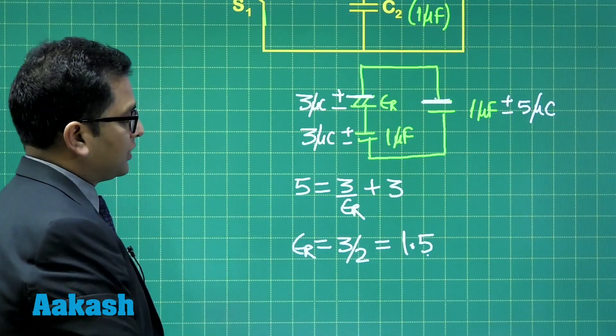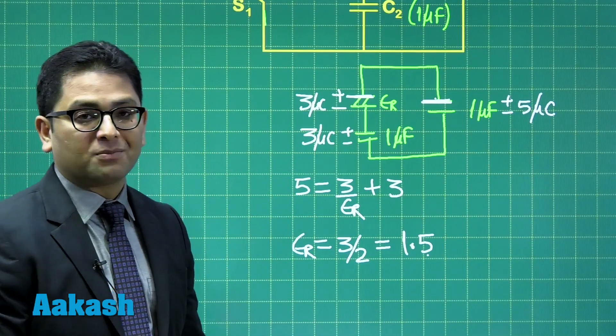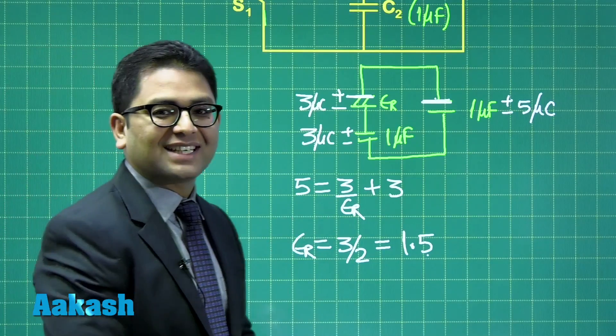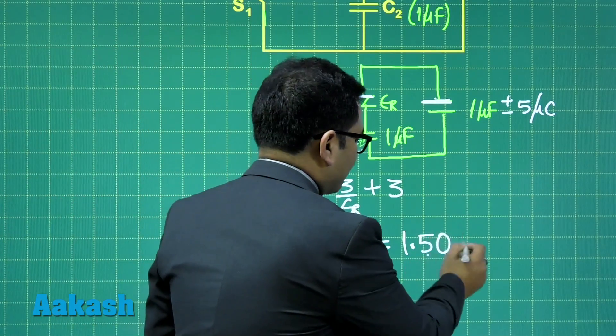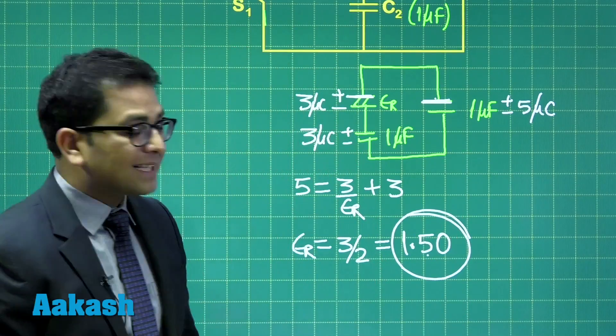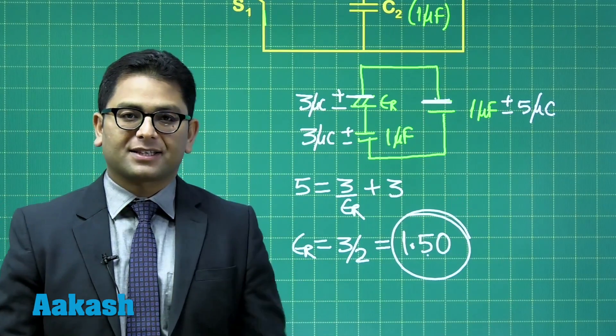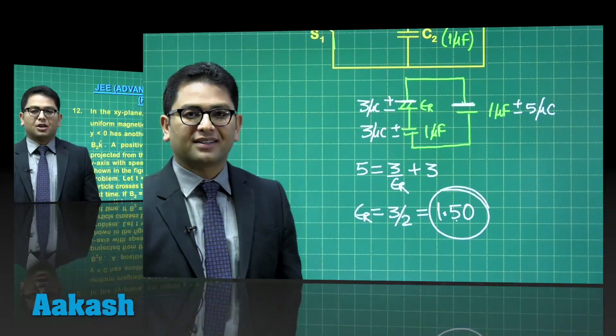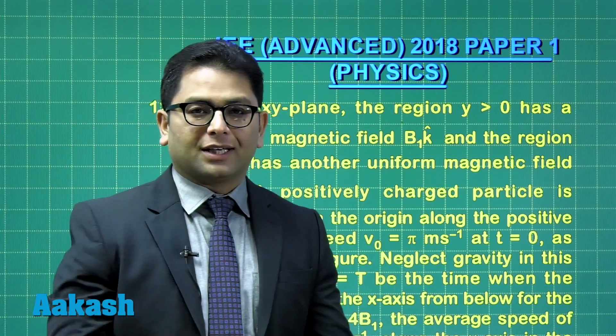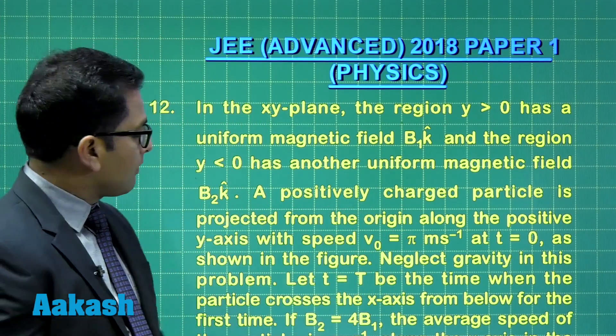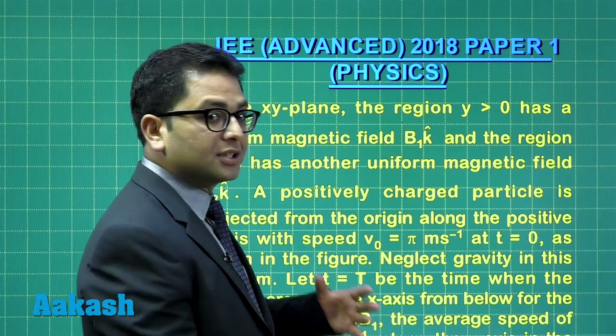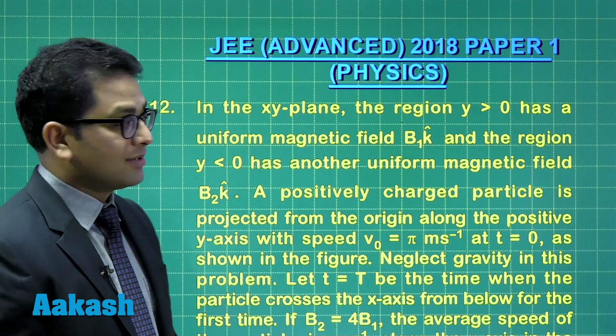And in order to comply with the question paper norms, where you need to write two digits after decimal, that's going to be 1.50. So, that's the relative permittivity of this capacitor. Let's move to the next one. Question number 12, another straightforward question derived from the topic, motion of a charged particle in magnetic field.